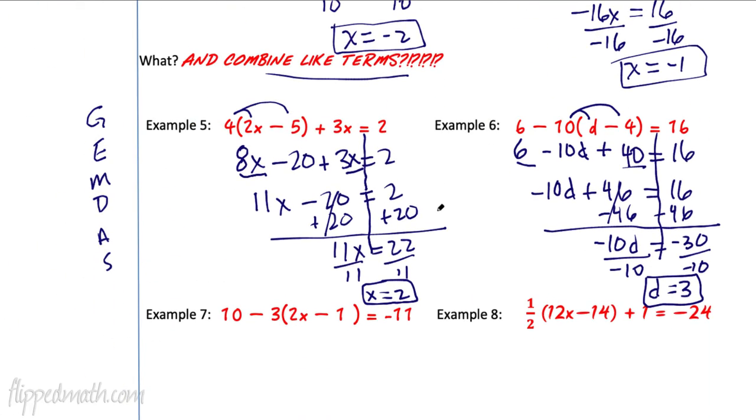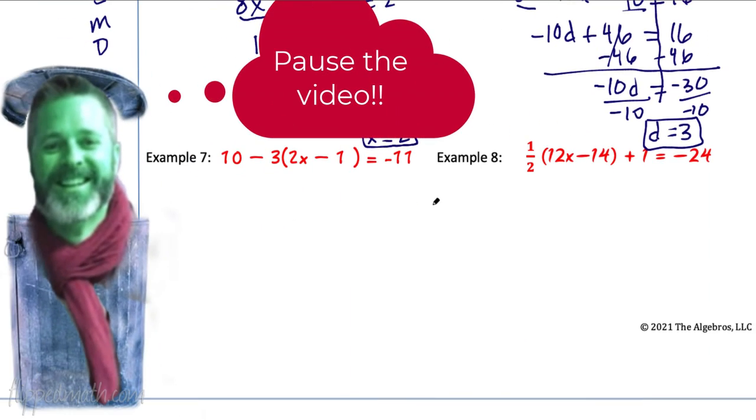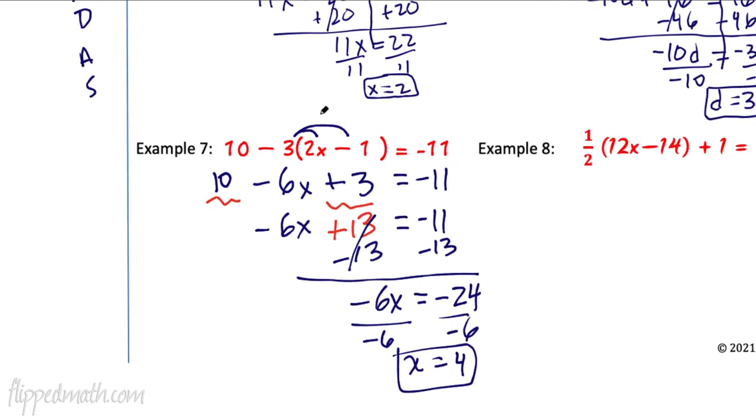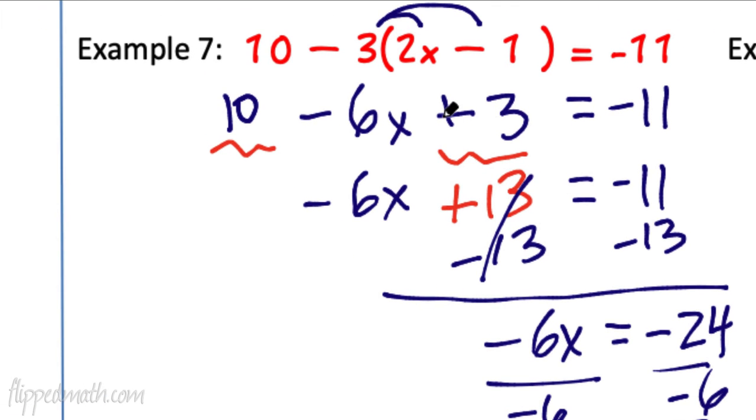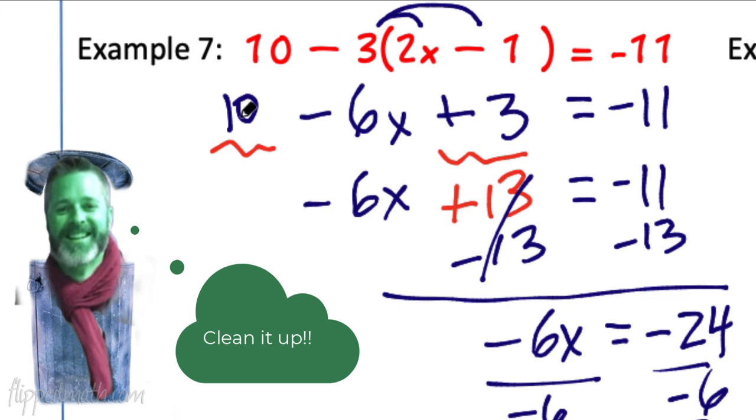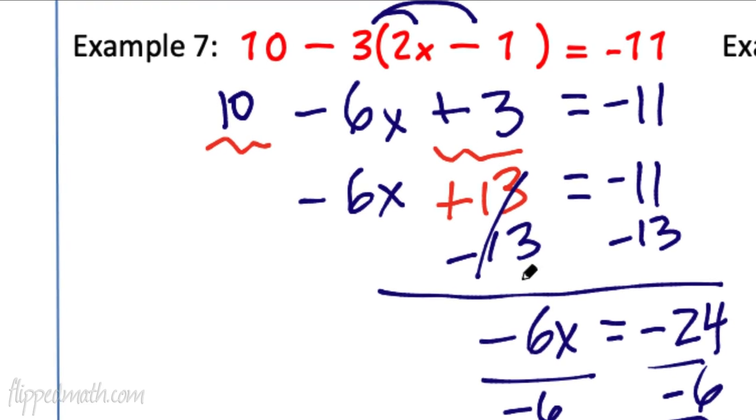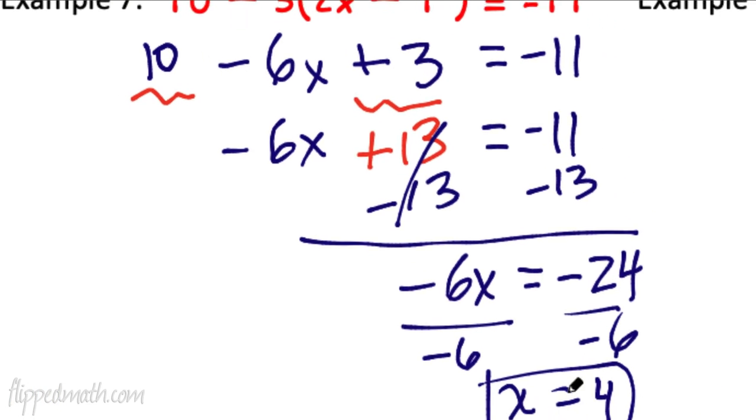Why don't you pause the video and try example 7 all by yourself? Very similar. Lots of negatives. You love those negatives. Okay. So this is what I got. I used a little bit of color to help you kind of see what I did here, but distribute. Do not forget that. That's a positive 3 because it's negative 3 times negative 1. And then you clean up that trash. Clean it up. We're going to put that 10 and 3 together. This gives us a 13. The negative 6 is just staying. Don't forget the negative. And then it becomes a two-step equation. Subtract 13 divided by negative 6. We're all done there.